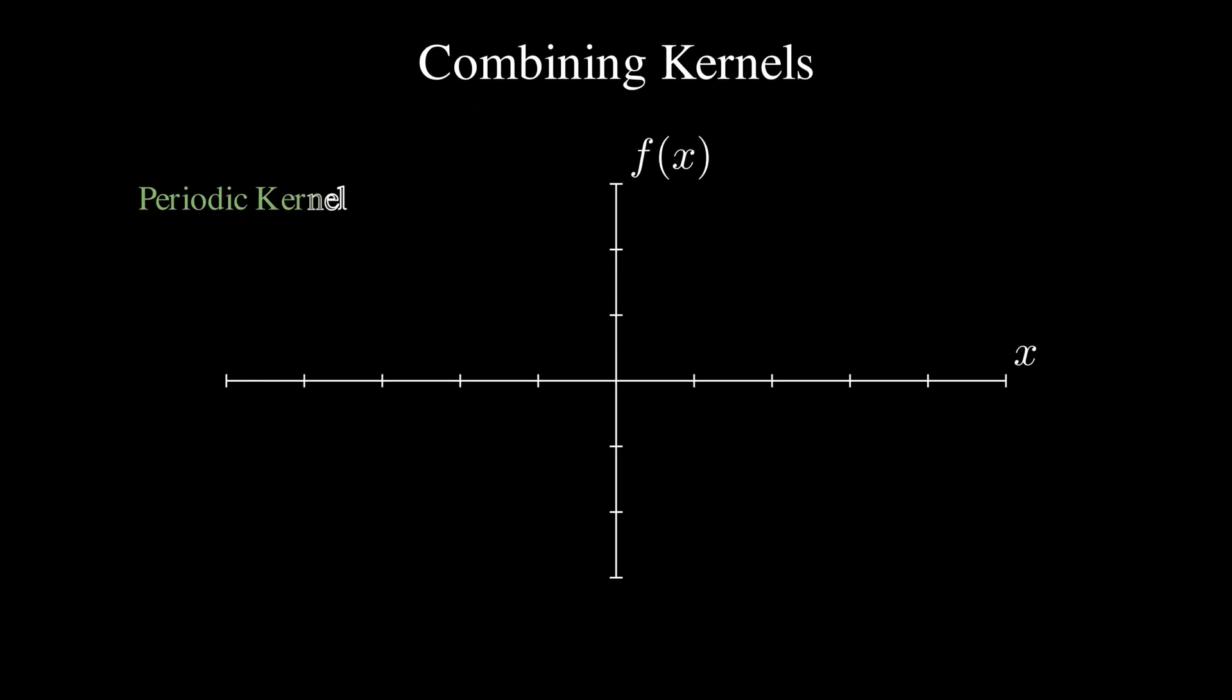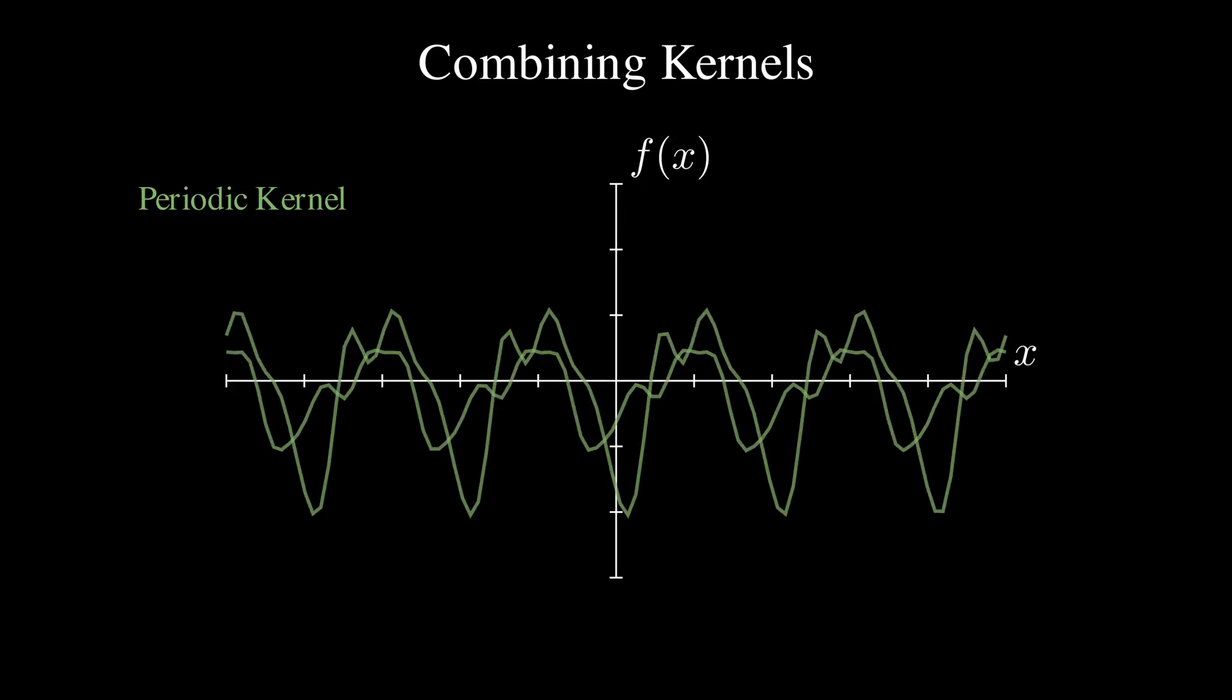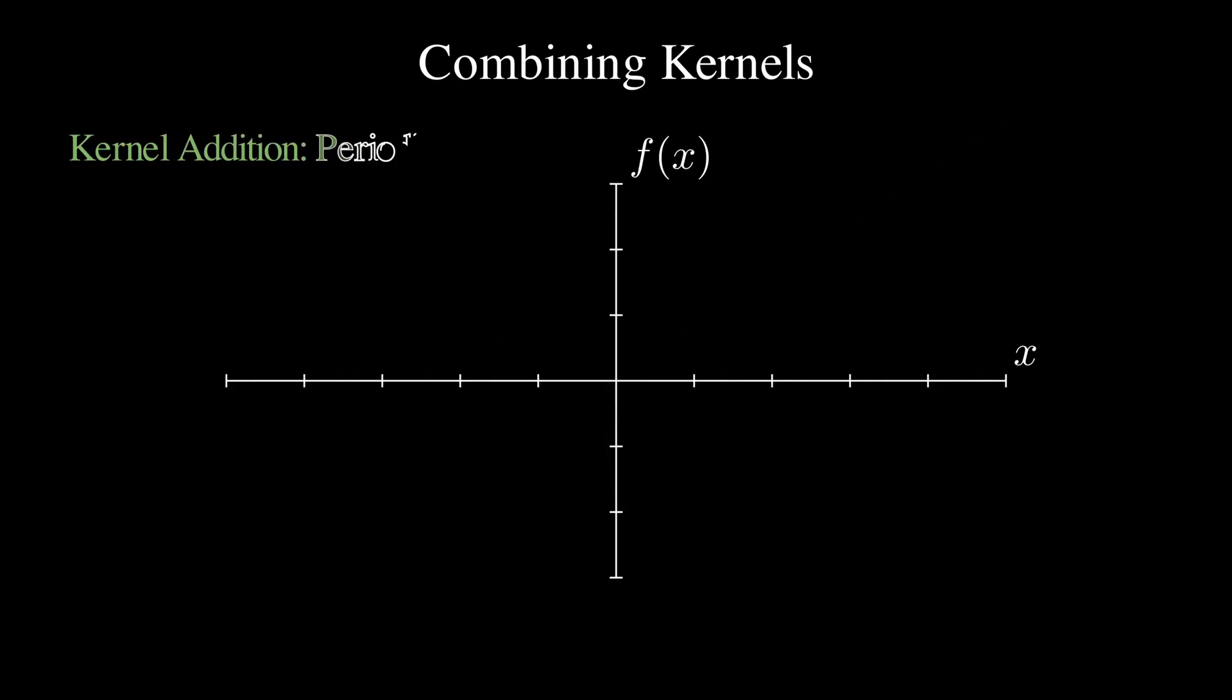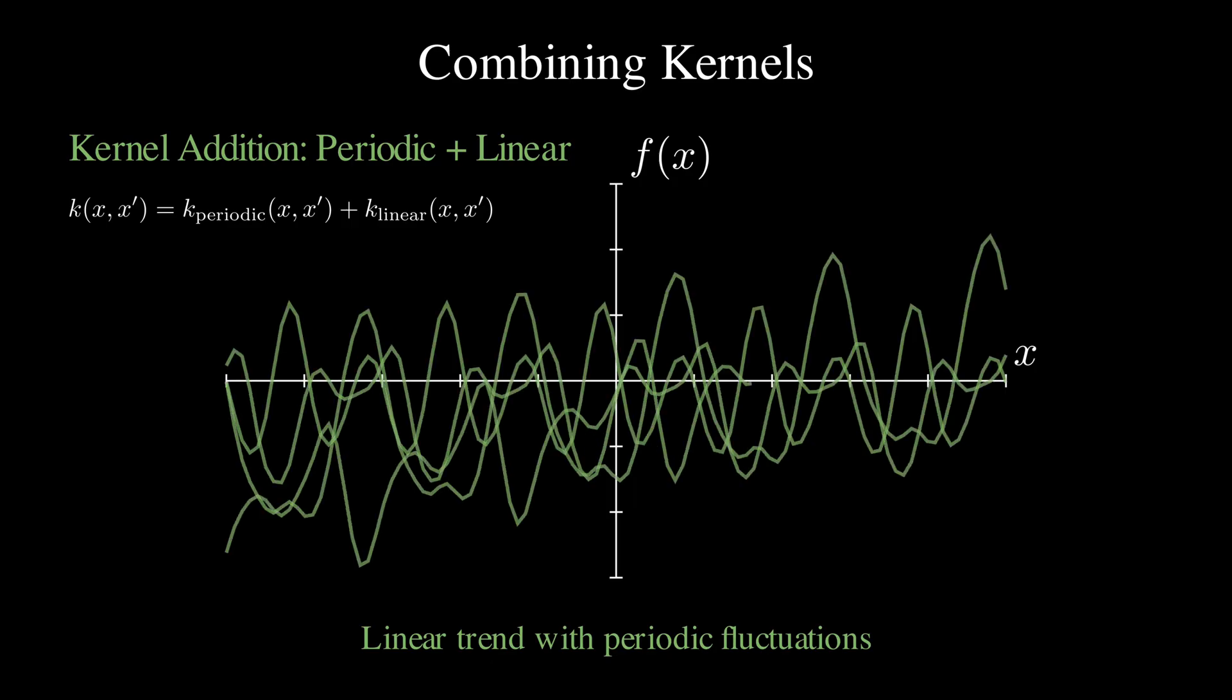The really interesting thing about kernels is that we can combine them to create complex patterns. Let me show you how. For instance, let's take functions from the periodic kernel where they oscillate with a regular pattern and functions from the linear kernel which generates straight lines with different slopes. Now, watch what happens when we add them together. The formula simply becomes k(x, x') = k_periodic(x, x') + k_linear(x, x'). And this addition creates functions that have a linear trend with periodic fluctuations riding on top. And look at these samples. They are oscillating but also trending upward and downward. This combination perfectly captures phenomena like a steadily growing economy with seasonal fluctuations.